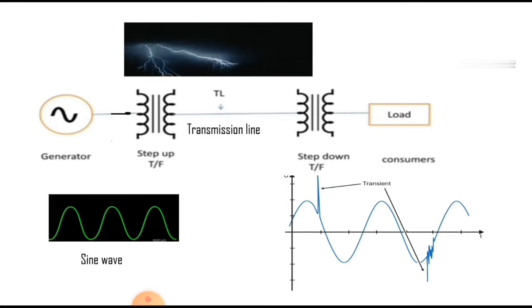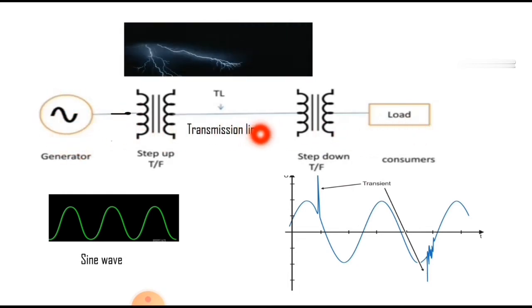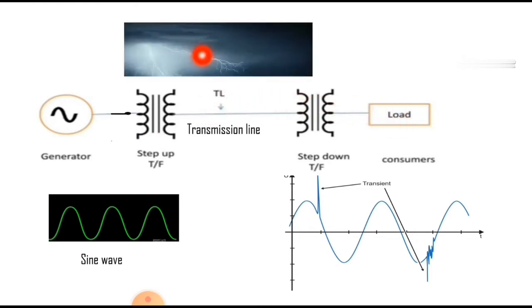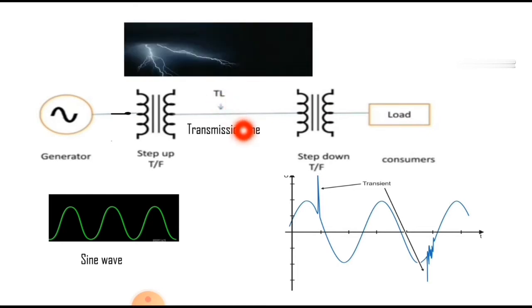The definition of transients is clearly explained in this pictorial representation. This is the entire power system — the generation, transmission lines, and then the load. The power generated at the generating stations is transferred through the transmission lines to the load. Lightning is one example that strikes on this transmission line.